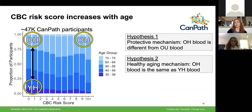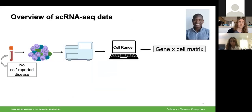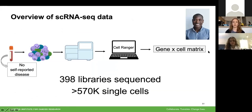A second hypothesis is that there might be a healthy aging mechanism, meaning that blood from old healthy individuals is the same as blood from young healthy individuals. If the second hypothesis is true, we also think there might be an accelerated aging mechanism, meaning that blood from young unhealthy individuals is the same as old unhealthy. We selected individuals from those four groups in the CAMPATH cohort, ensuring they had no self-reported disease. We obtained those blood samples and performed single-cell RNA sequencing on about 400 samples, producing a gene-by-cell matrix. In total, we sequenced 398 libraries and about 500,000 single cells.